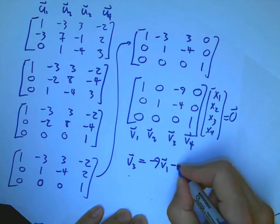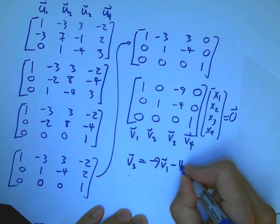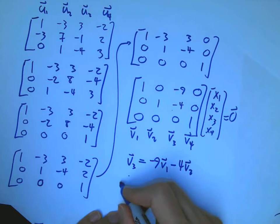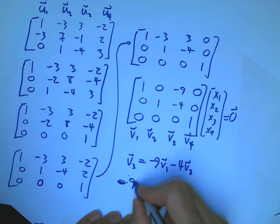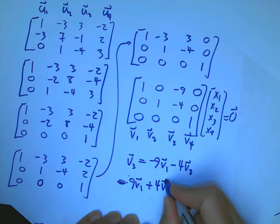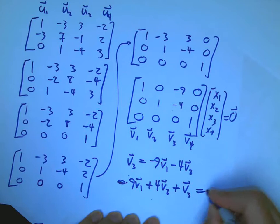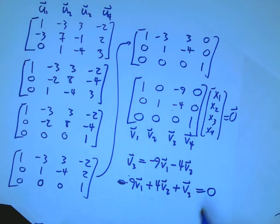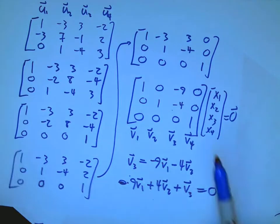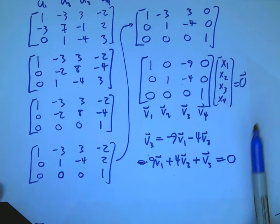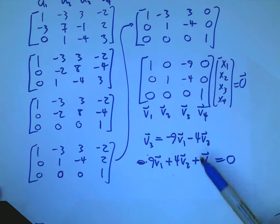Or if we like to write it in that symmetric way that's kind of preferred, the sum of all these is equal to zero. And we could put in a plus zero v4, but that would be redundant — we don't really need to do that. So that's one relationship among these vectors.